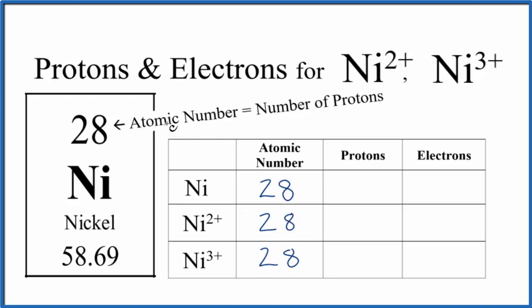The atomic number equals the number of protons. So we have 28 protons. Same again for the ions.